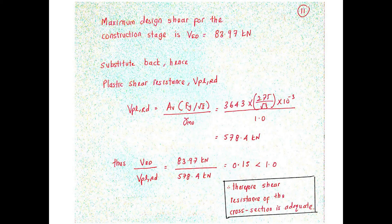Verify that the ratio of the maximum design shear force over the plastic resistance design must be less than 1. In which, in this case, the shear resistance of the cross-section is adequate.